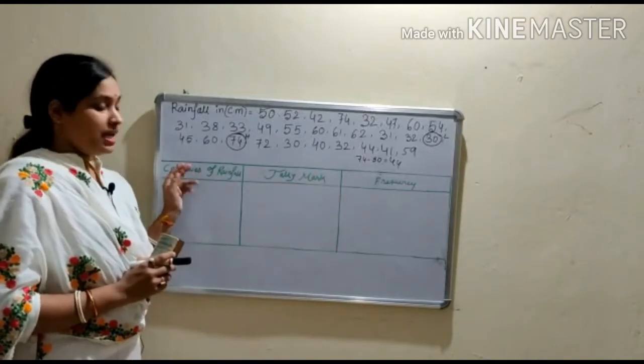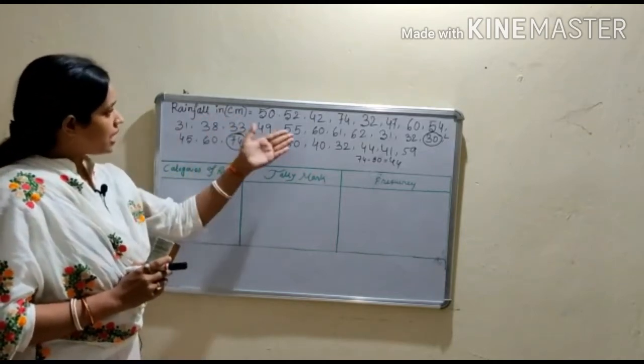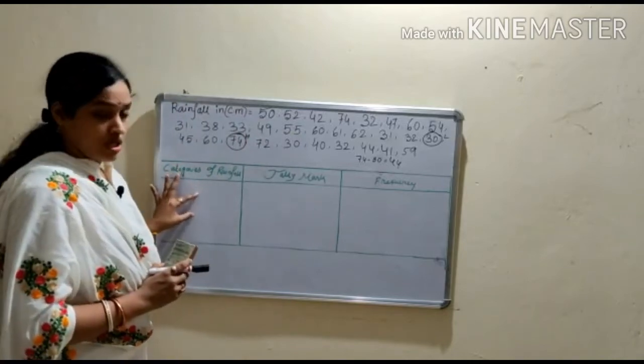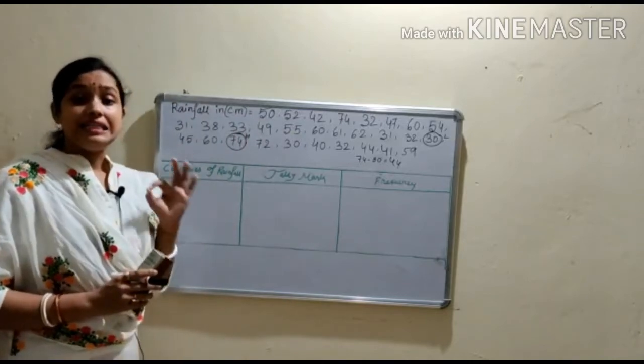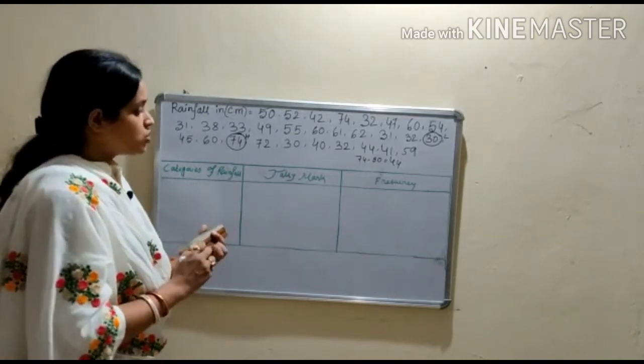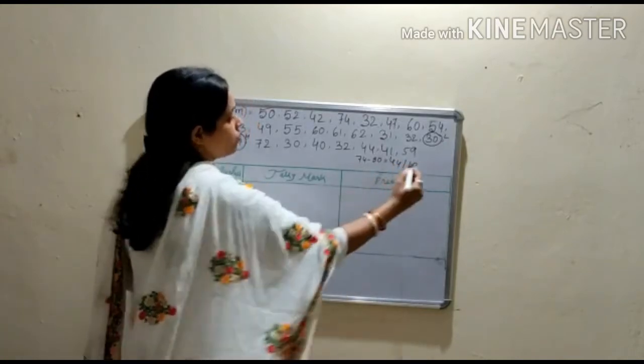Here I'm writing categories of rainfall because this data are based on rainfall in centimeter. So in this section we take 10 equal range of category. So here, that's why 44 divided by 10, so we found here 4.4.